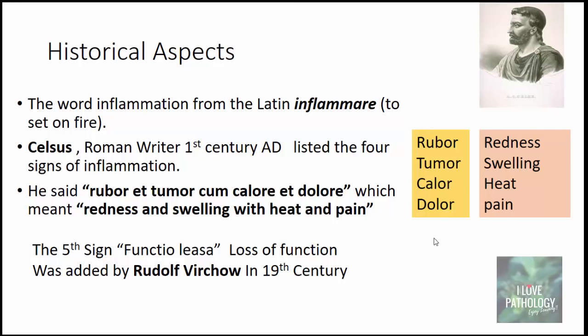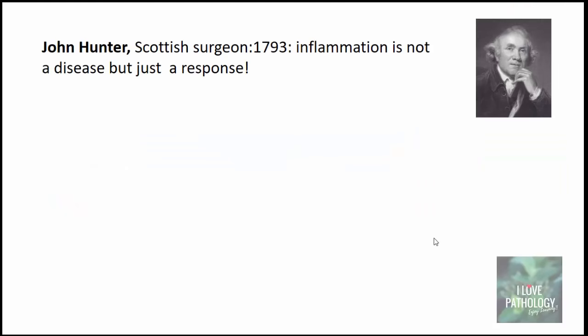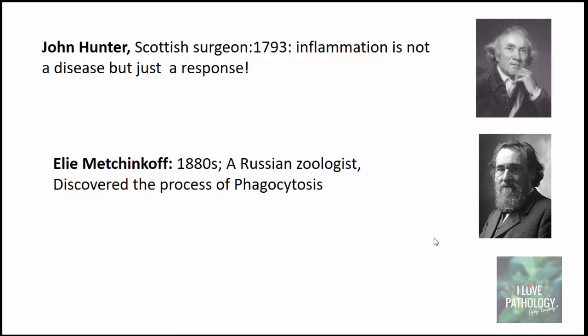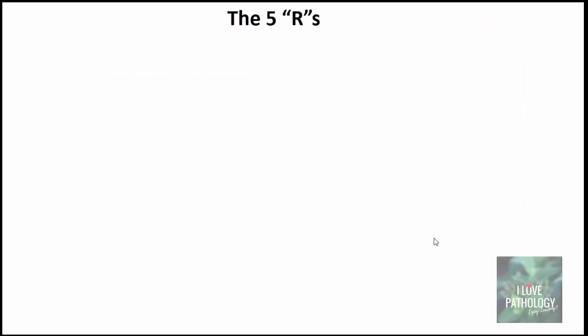Apart from these four signs, there is a fifth sign called 'functio laesa,' meaning loss of function, which was added by Rudolf Virchow in the 19th century. John Hunter, a Scottish surgeon in 1793, said inflammation is not a disease but just a response. Elie Metchnikoff, a Russian zoologist in the 1880s, discovered the process of phagocytosis, where leukocytes engulf, kill, and degrade the injurious agent.